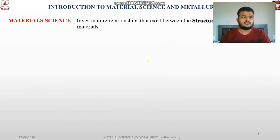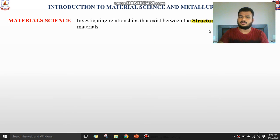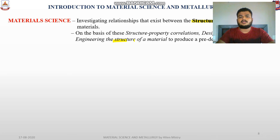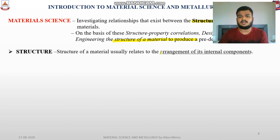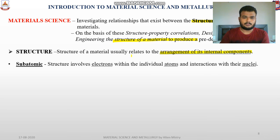Material science is the investigation of the relationship that exists between the structure and properties of a material. On the basis of this structure and property, the desired dimensions of property and structure to be produced are set. Talking about structure — the structure of a material is usually related to the arrangement of its internal components. Structures deal with the arrangement of internal components of a material, and this internal component may be subdivided into different parts.